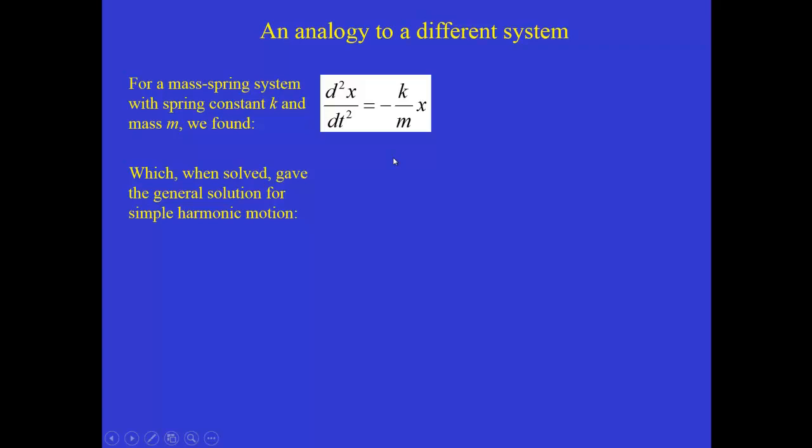So the equation for the LC circuit, the inductor-capacitor circuit, was d²Q/dt², and then it was minus 1 over LC times Q. So we'll see in a minute, we can use the solutions to the harmonic oscillator equation, the mass-spring system, to give us very similar solutions for the LC circuit. You'll remember that when we actually did solve this equation, or at least we proved that this was true, we looked at the solutions.